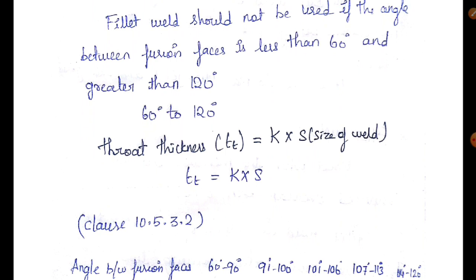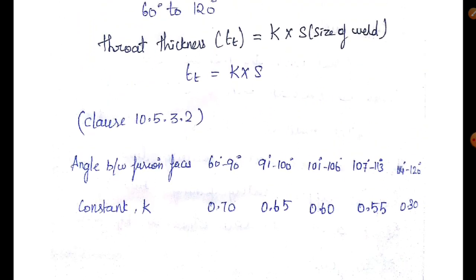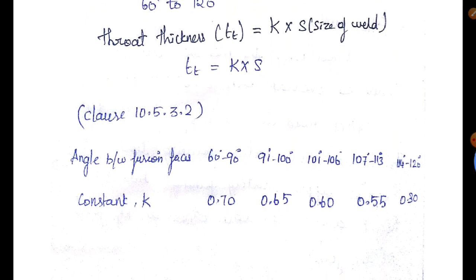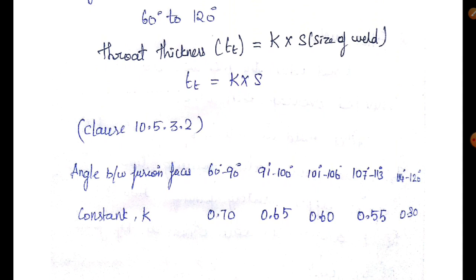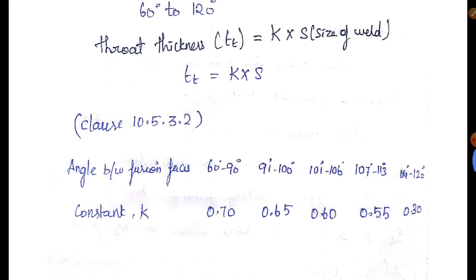The thickness of the throat is effective for stress transfer. Throat thickness is equal to k × s, where s is the size of weld. If you don't have a doubt about k × s, k is a constant. There is a table in IS code clause 10.5.3.2. The angle between fusion faces determines the throat thickness. The k value is read from that table for the given angle between 60° and 120°.